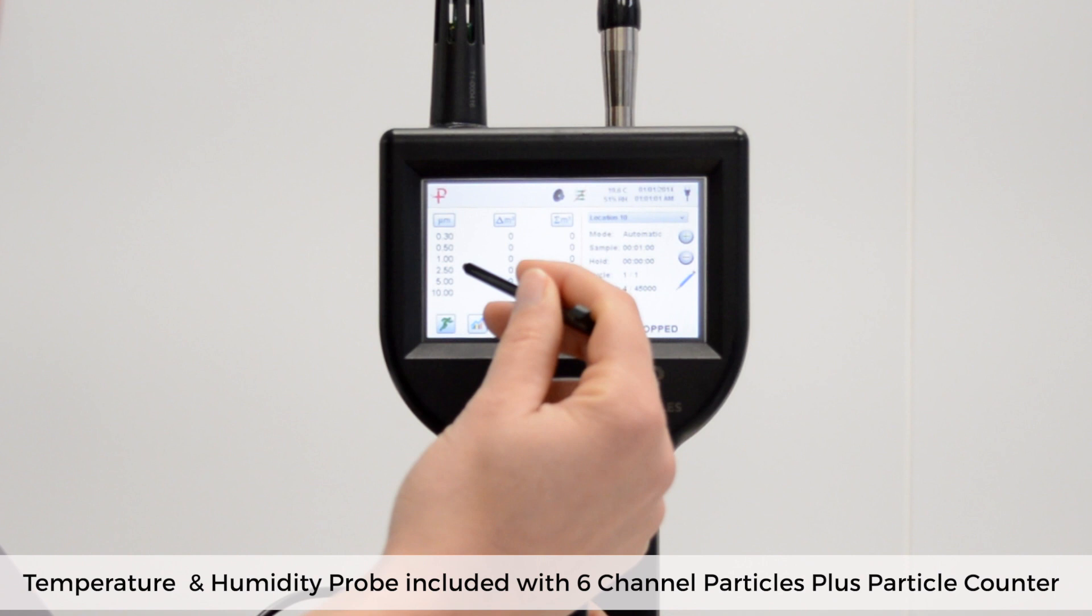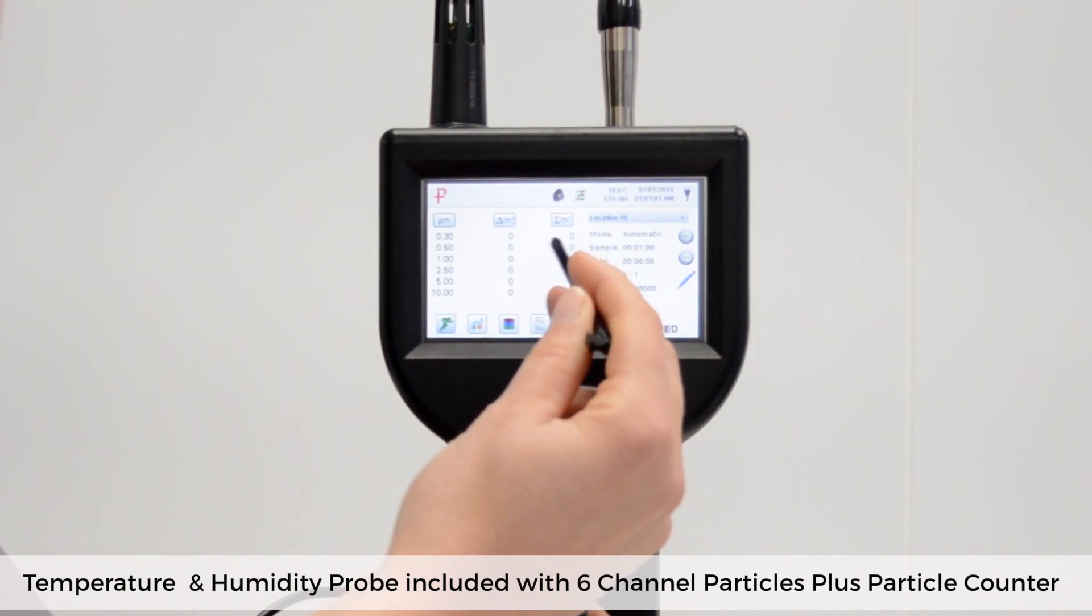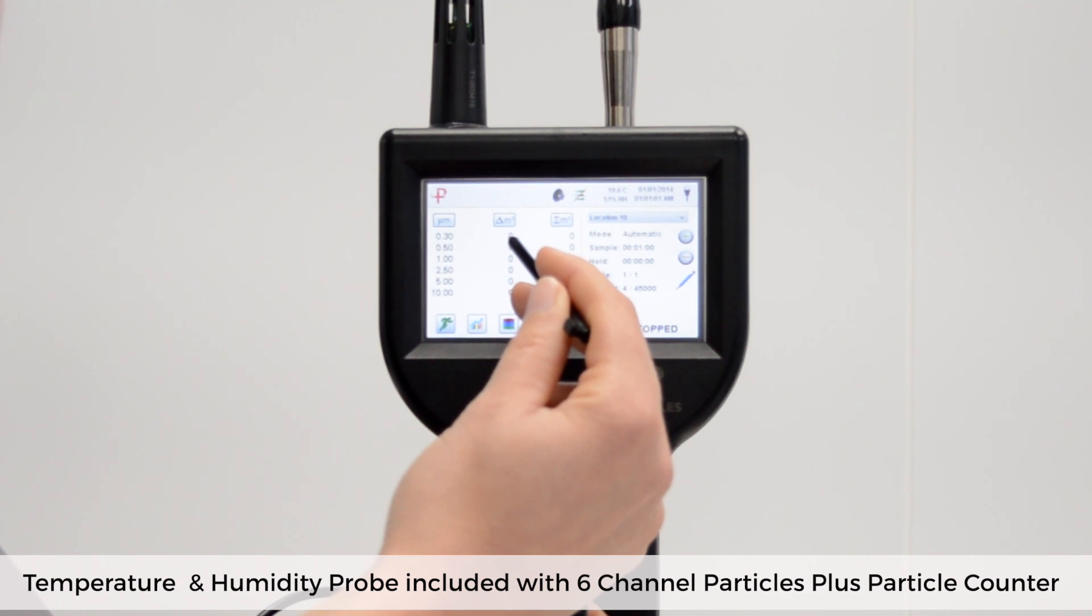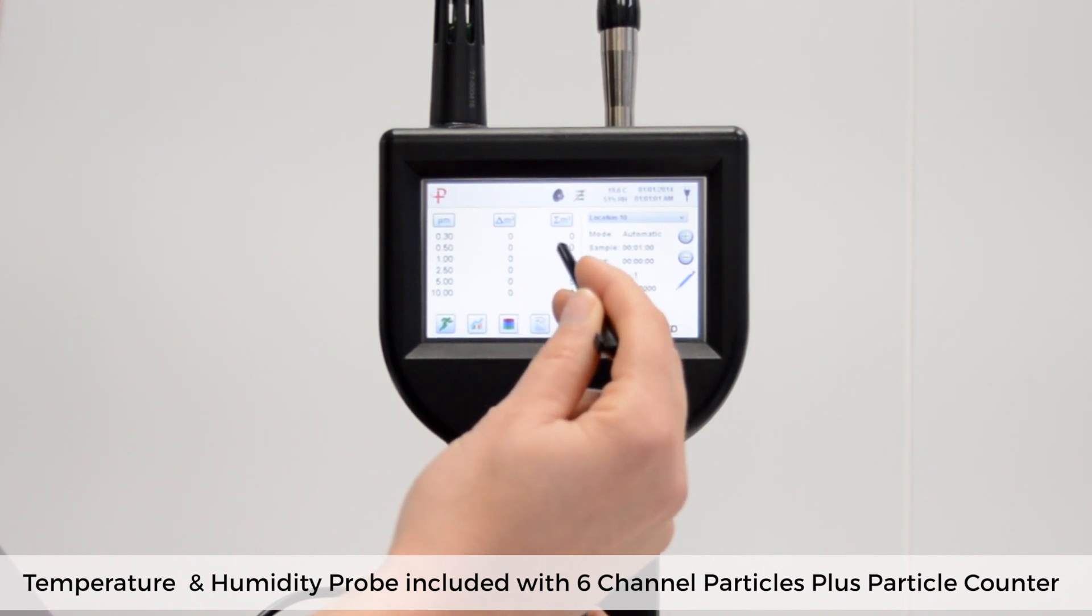Particle counters display readings in two columns, differential and cumulative. The second column with the delta heading shows a differential total which is the number of particles which are at least that size in diameter and up to but not including the next size. The third column with the sigma heading shows the cumulative total which is the amount of particles that were found at that size and greater. It is a cumulative column which the ISO standard relates to.